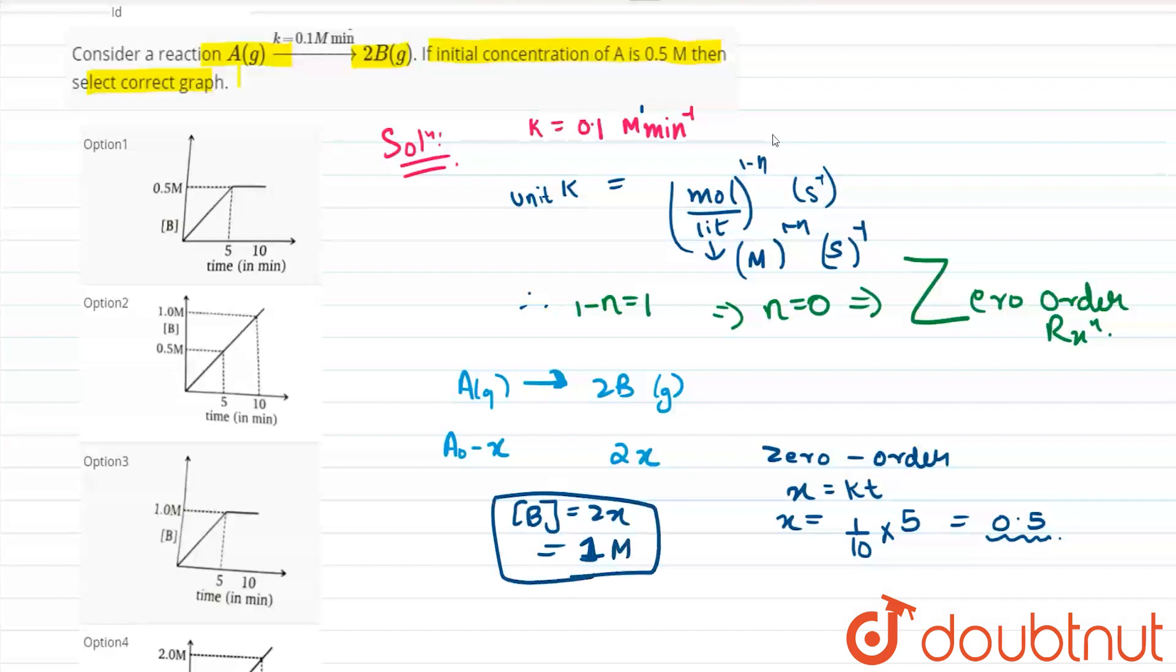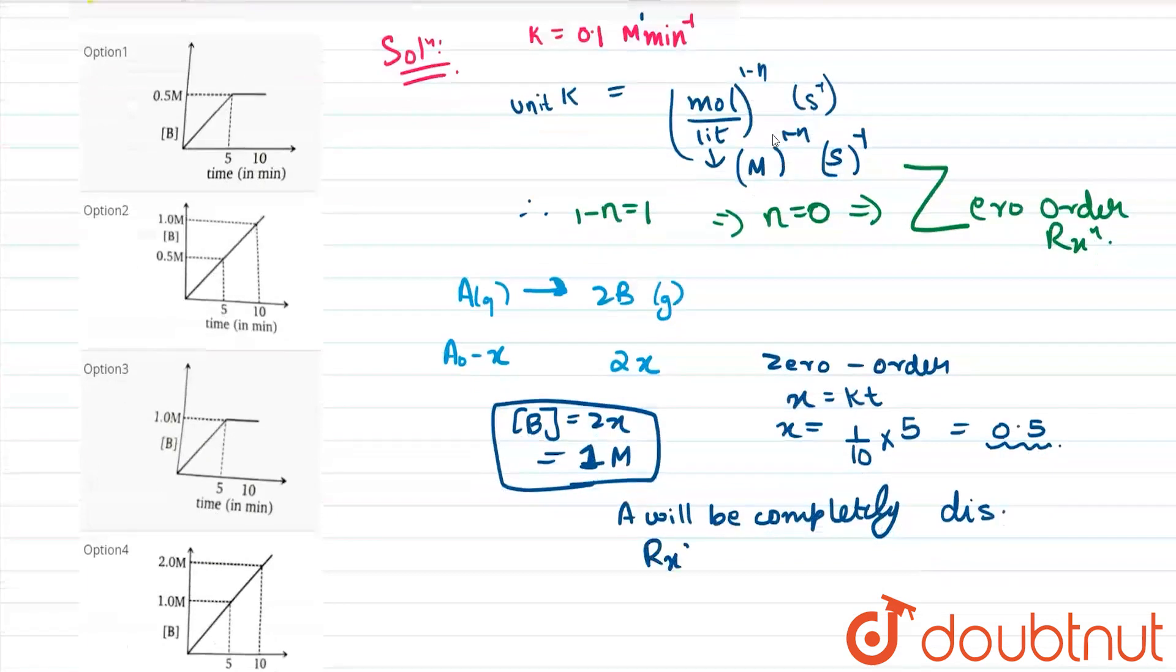Okay, so friends after 1 molar, A will be completely disappeared. A will be completely disappeared and friends what will happen, reaction will stop, reaction will stop after this. So let us check out which graph satisfies our given condition.